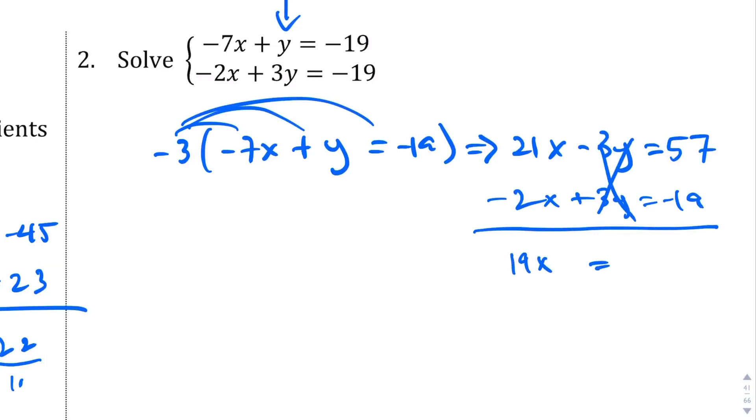Let me zoom in here. So 21 minus 2 is 19x. This gets rid of the y's. And then 57 minus 19 is, what is that, 38. And then we're going to divide by 19, and I hope you know your 19 times tables. This is going to be 2. X equals 2.